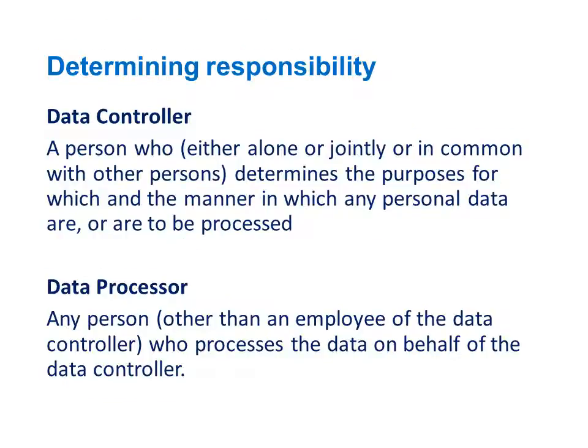A brief note on data controllers and data processors. The data controller under the Data Protection Act is a person who determines the purposes for which and the manner in which any personal data are to be processed — they make the decisions about how that data will be handled. The data processor is any person processing data on behalf of the data controller, doing so under instruction from them. If somebody is carrying out work under your instructions with that information, they're likely a data processor and you need a data processing agreement. If it's a number of data controllers working together, you're more likely to use a data sharing agreement.